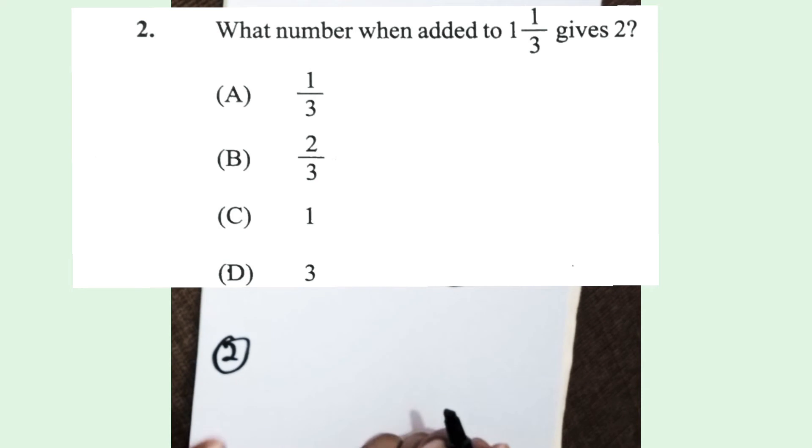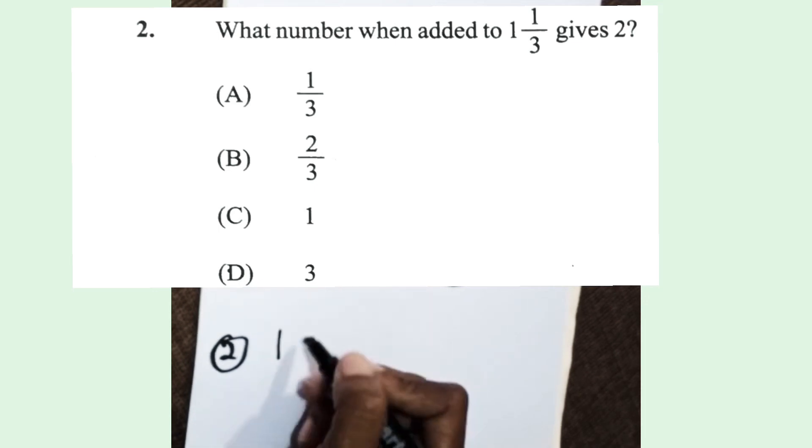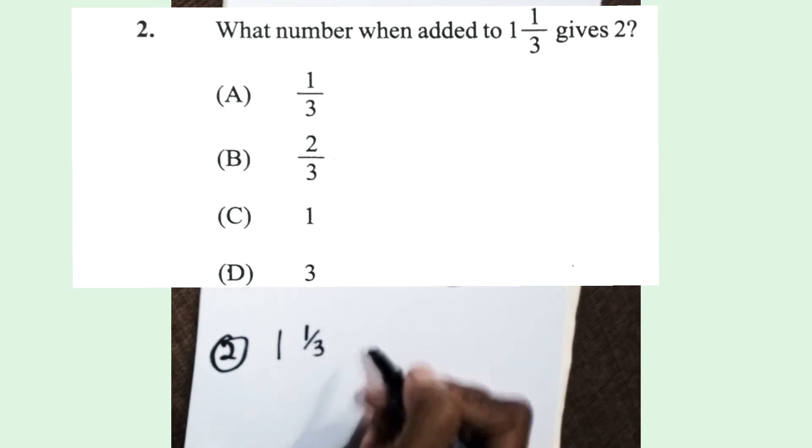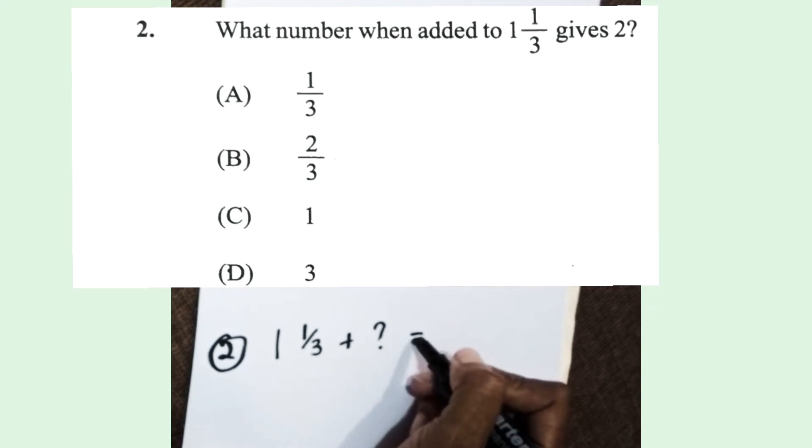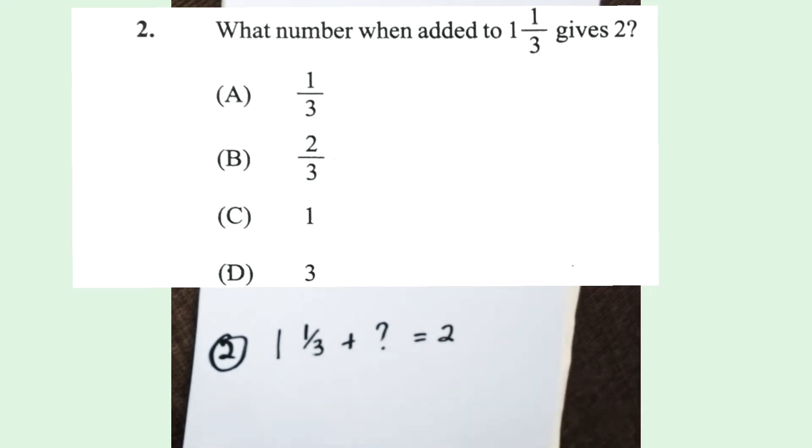Number two: what number when added to one and one third gives two? Make sure you look at what they are asking you for. You add to one and one third to give you two, so you have your one whole and you need to get the other whole to make it two. Three one-thirds give you one, and one-third is already there, so to make it one you need two one-thirds. Your answer is B, two-thirds.